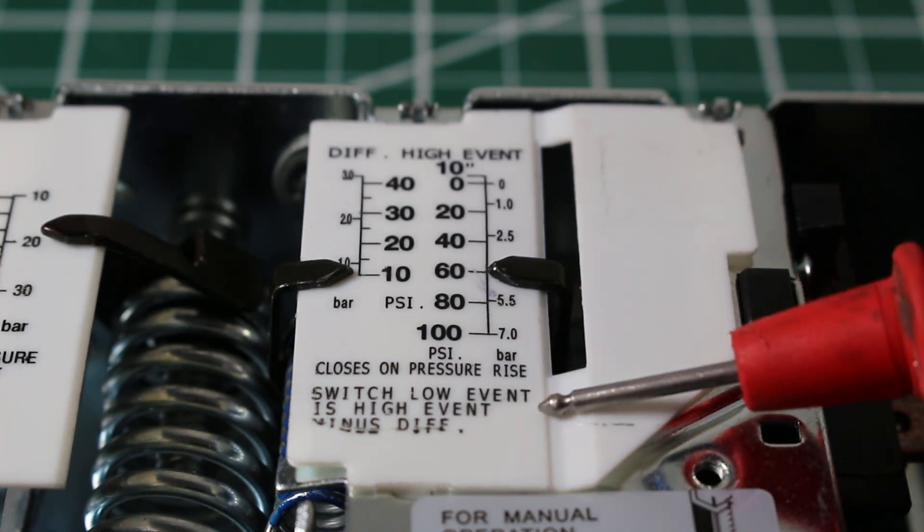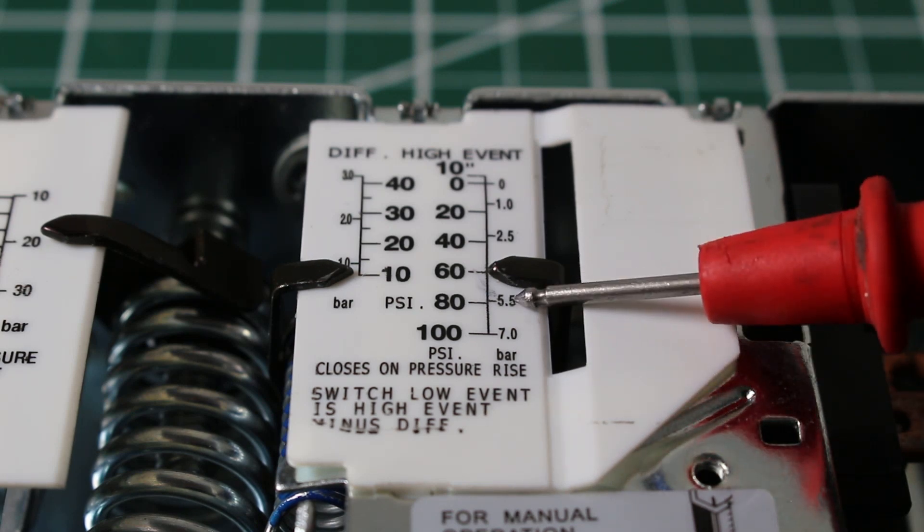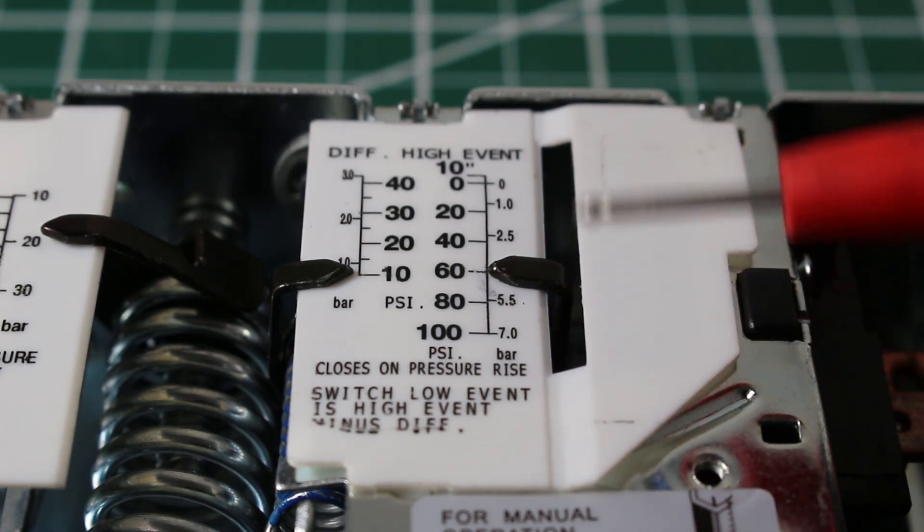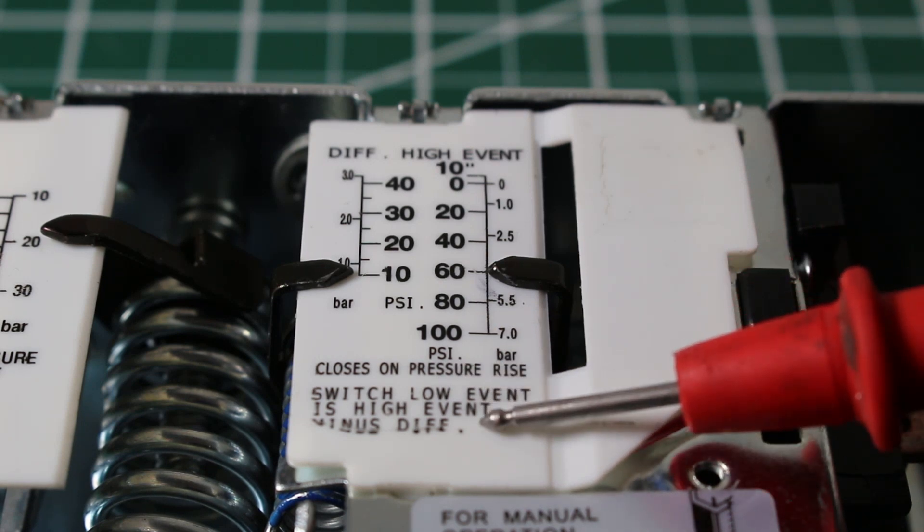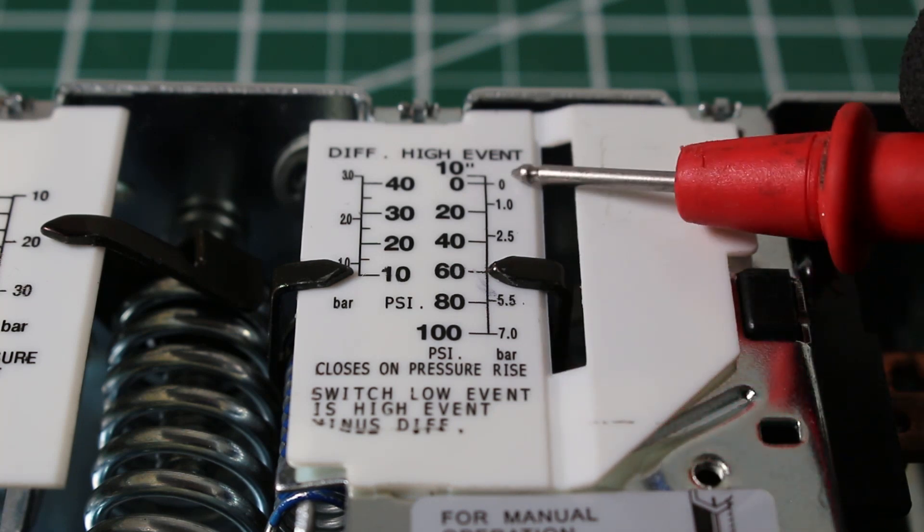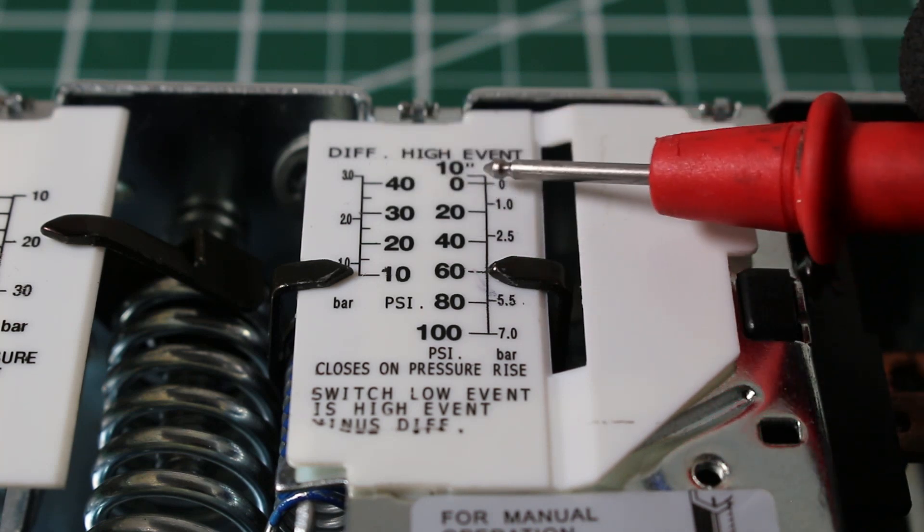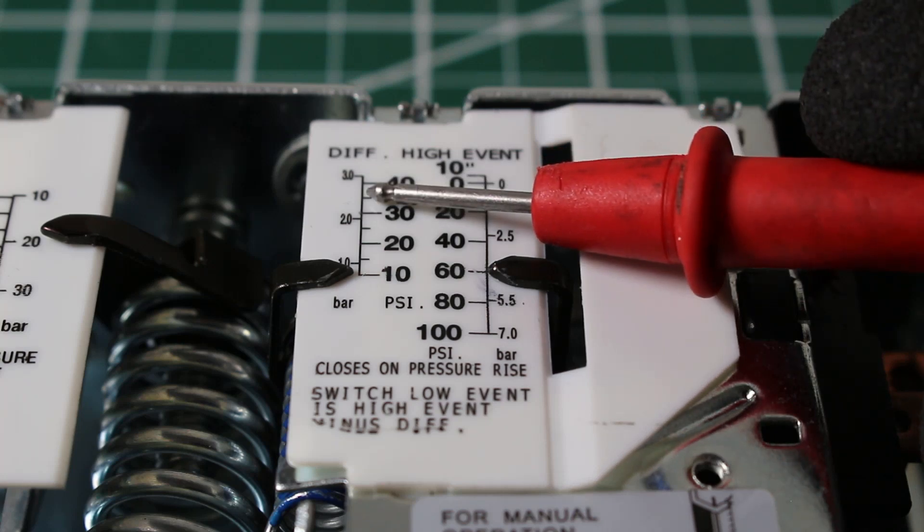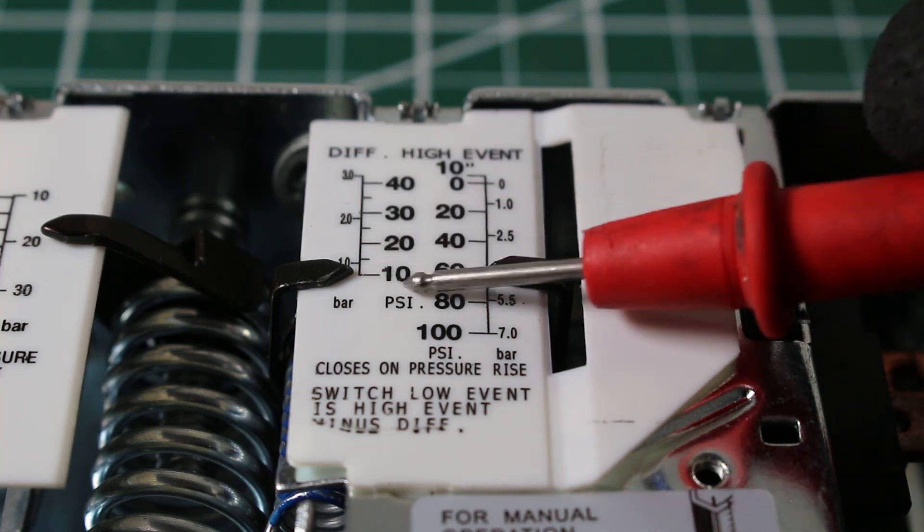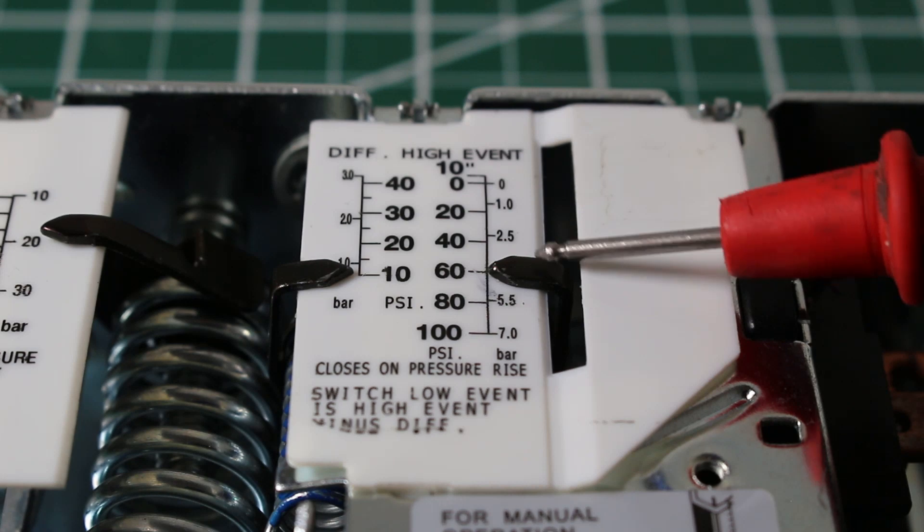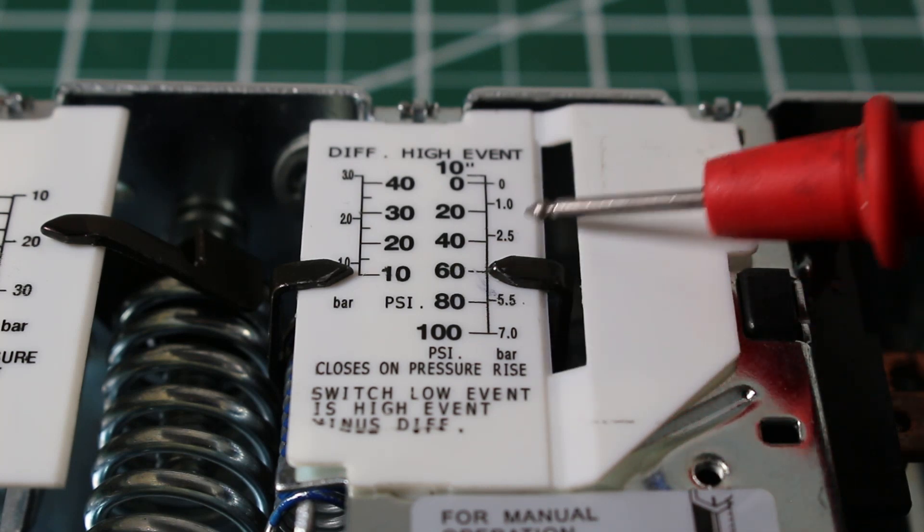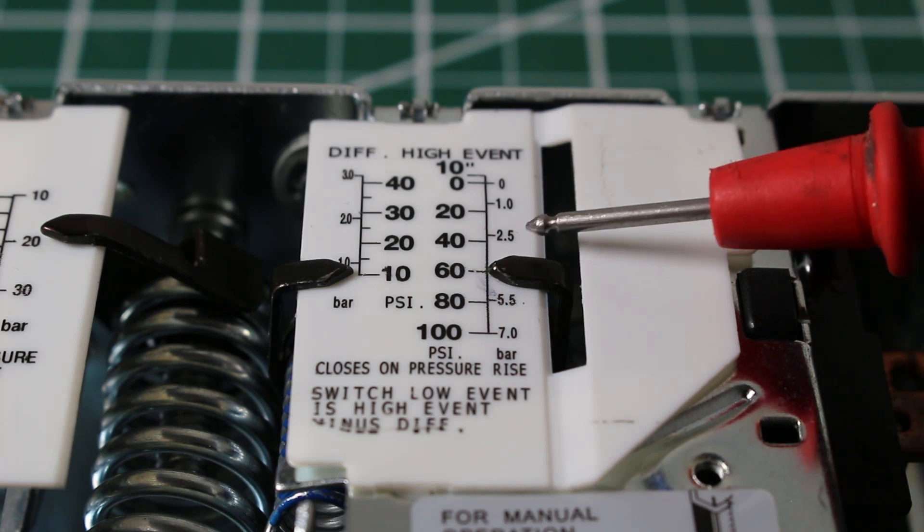So what is our low event? Our low event is the pressure we want our system to cut off at. Right now it is set to 50. I'll explain that, but let's go over what this means. So it says low event is high event minus differential. So the low pressure this control will be set at is going to be the difference between your high event and your differential, right? High event minus differential. So let's see what this is set at. So our high event is 60 and our differential is 10. That means our low event is 50. So at 50 pounds of pressure, this control will open our circuit and stop everything to protect it.